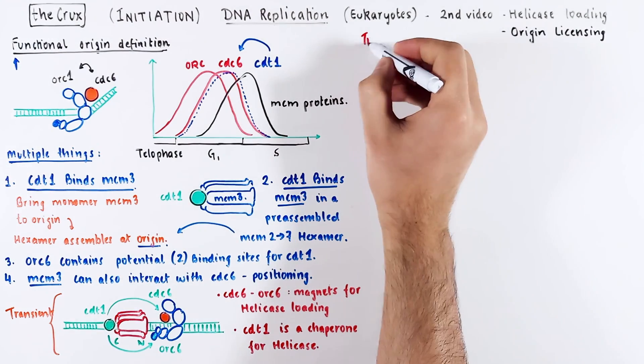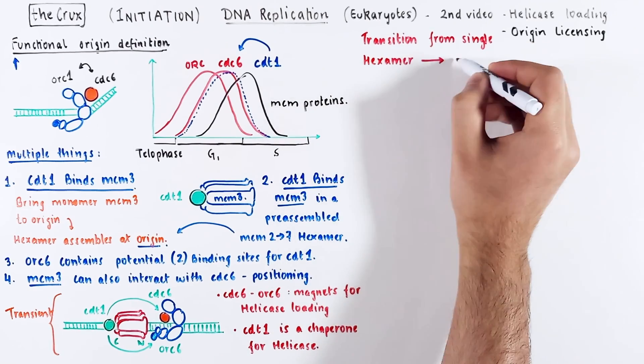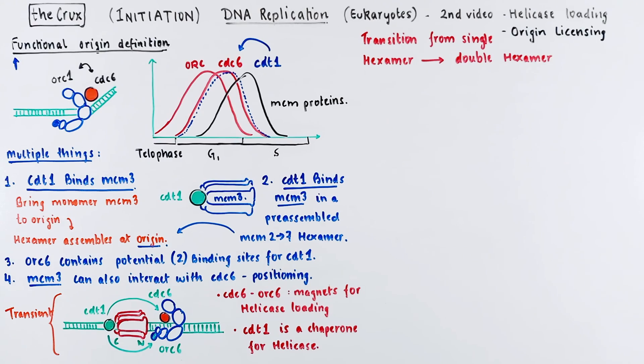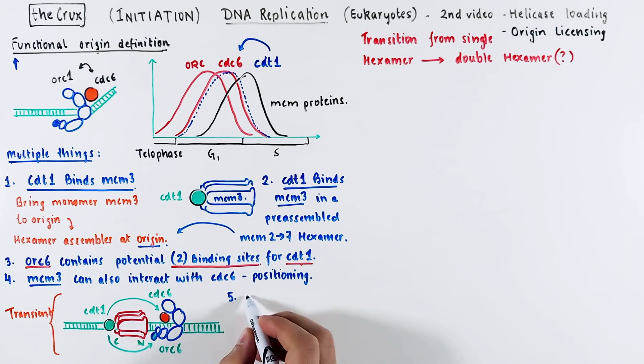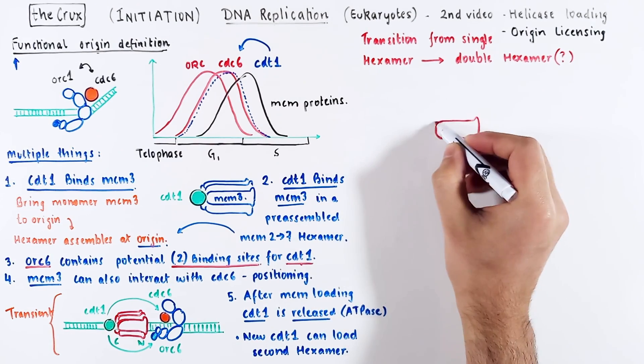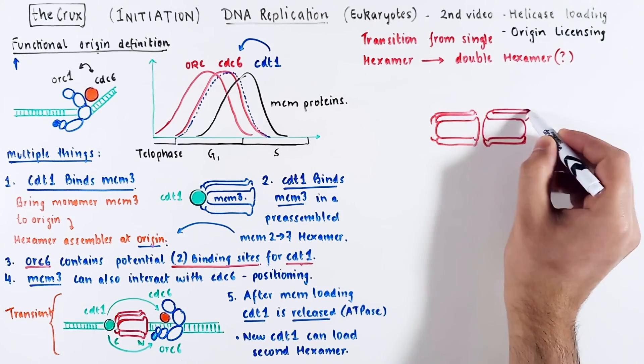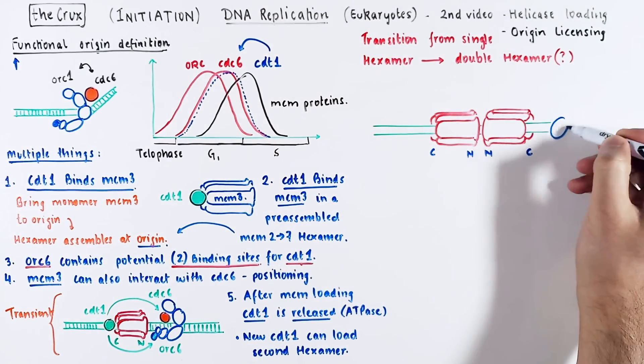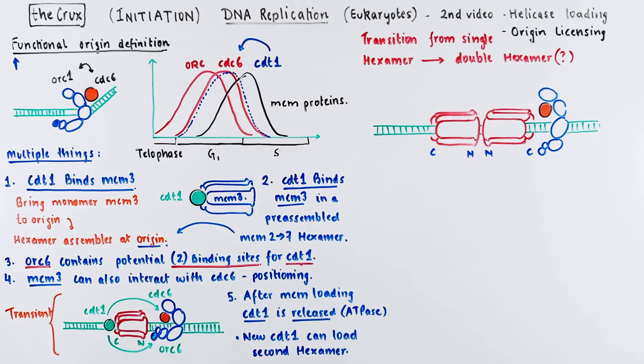Now after the formation of single hexamer complex at the origin, it transitions into a double hexamer state. Let's now see how that happens. Notice we said that ORC-6 contains two binding sites for CDT-1. So the second CDT-1 can bind the ORC-6 and load another hexamer, which forms the double hexamer. Alternatively, consider point 5. There is some evidence to say that after the first hexamer loading is done, the ATPase domains in that complex are activated and it causes the release of CDT-1. This frees up space for another CDT-1 to come in and load another hexamer. So there are multiple potential ways to load a double hexamer. And the final complex will look something like this, where the N-terminal regions help in the oligomerization of two hexamers.